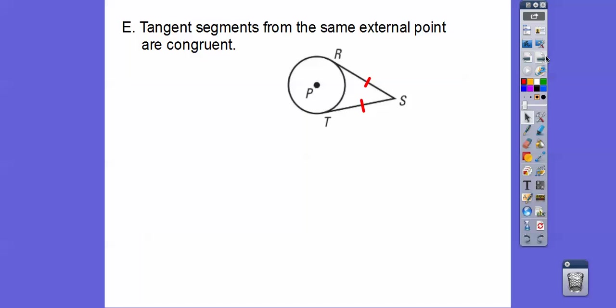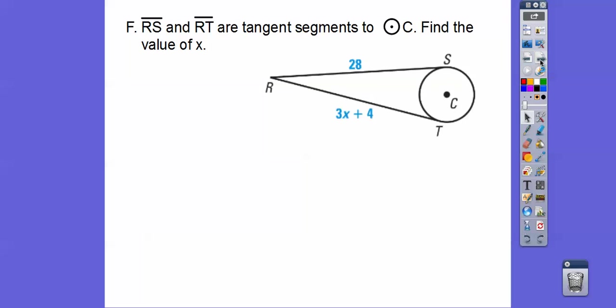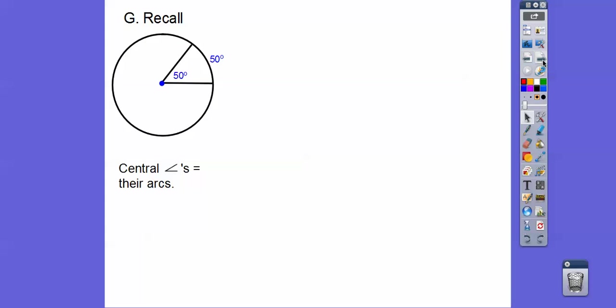Tangent segments from the same external point are congruent. So these two guys are congruent to each other. Here's 3X plus 4 equals 28. If they're tangent segments, then you set those equal and solve, and we get X equals 8.